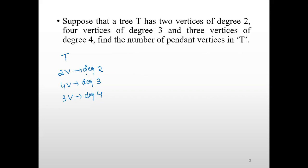The degree is the total number of edges incident on a given vertex, and a pendant vertex is a vertex which has degree 1. In this problem, we need to find out the total number of pendant vertices.